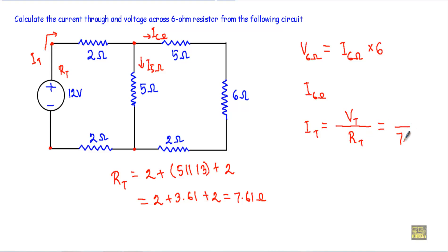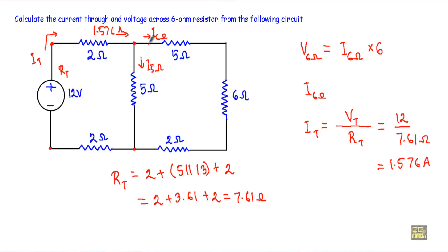Now RT = 7.61 ohm and the total supply voltage is 12V, so IT = 12 / 7.61 = 1.576 ampere. This 1.576 ampere reaches a junction point — one portion goes in one direction and another portion goes in the other direction. The current going toward the 6 ohm branch is I6Ω. To calculate it using the current divider, I take the opposite branch resistance of 5 ohm and divide by the sum of all branch resistances: 5 / (5 + 5 + 6 + 2).